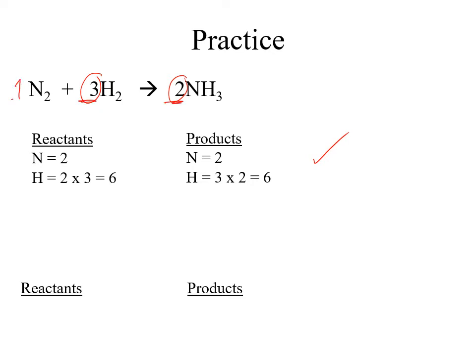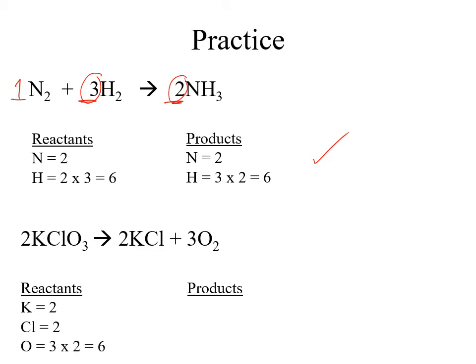You can write a coefficient of one, but we don't like writing ones in chemistry. We can also check if another equation is balanced: on the left we have two potassiums, two chlorines, and two groups of three oxygens — six oxygens. On the right, we have two potassiums, two chlorines, and six oxygens. Those are the correct coefficients to get the equation to balance.